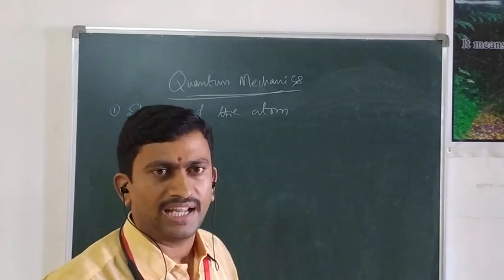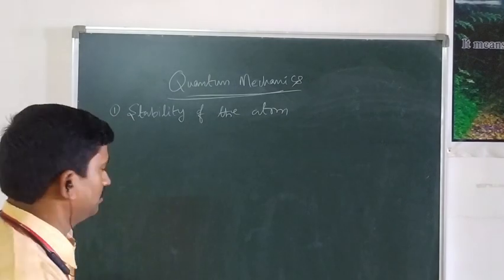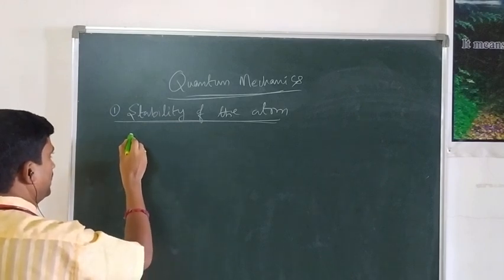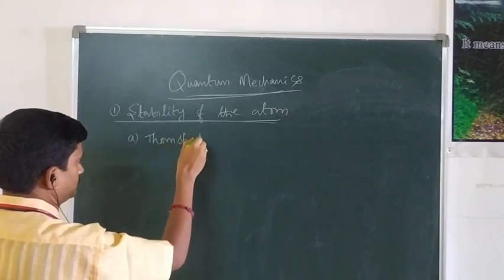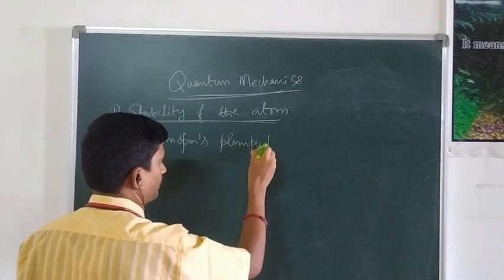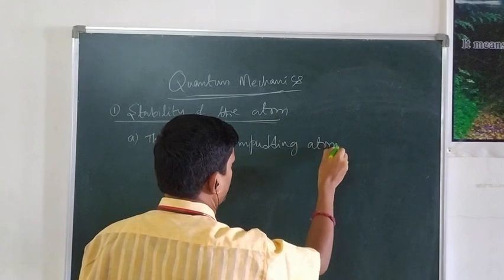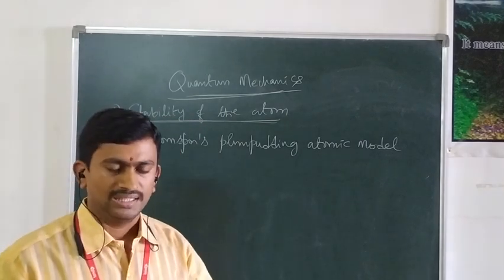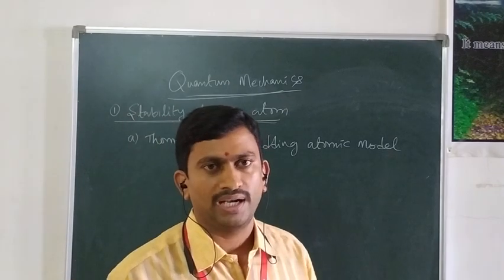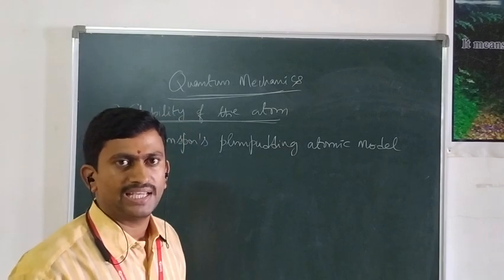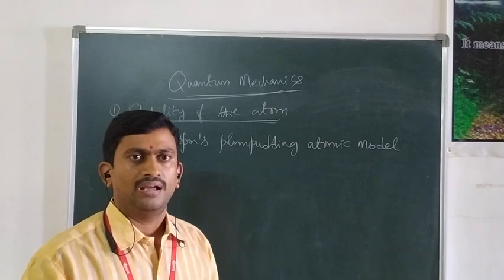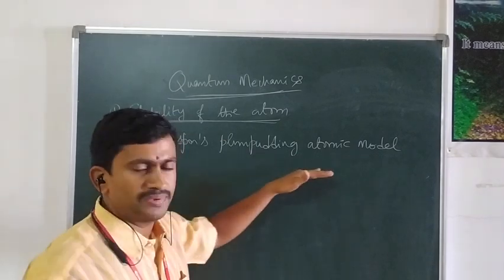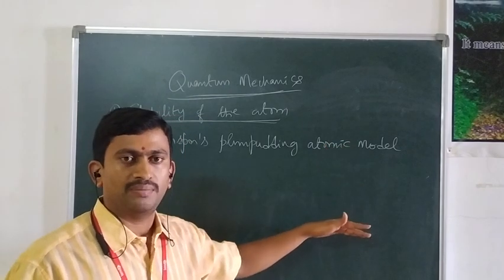In order to explain the stability of the atom, several atomic models came into the picture. But the first and foremost important model to explain the stability of the atom was nothing but the Thomson Plum Pudding Atomic Model. According to Thomson, the atom consists of both positive and negative charges, and all the negative charges are embedded like seats in the Plum Pudding, in between the positively charged region. It is popularly known as the Thomson Plum Pudding Model. But this particular Thomson atomic model also failed to explain any experimentally observed facts.